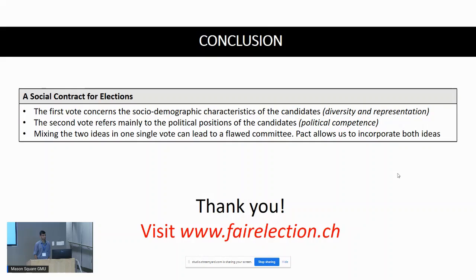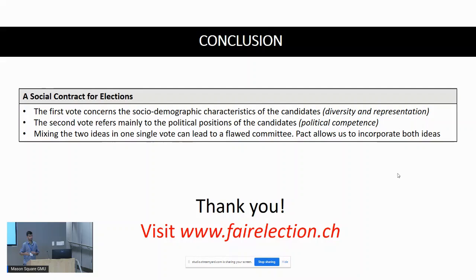Question: What was the voter turnout in the first round versus the second round, and does a difference in participation affect how representative the values are? In phase one there were around 350 voters, but around 500 had registered on the e-voting platform. In phase two there were 1,300 participants, but around 1,900 had registered. There is a disparity in turnout, and we expect people from phase one to participate in phase two, but there were people in phase two who did not participate in phase one.